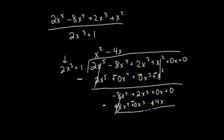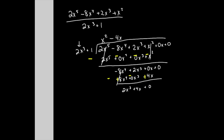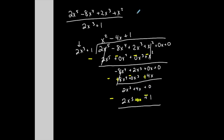2x³ minus 0 is 2x³. 0x plus 4x is positive 4x. Can I keep going? Yes — the degree here is the same as the degree of the divisor. I can multiply 2x³ by positive 1 to get 2x³, so 1 goes on top. 1 times 2x³ is 2x³, and 1 times 1 is positive 1, which goes under the constant column. I subtract — that negative distributes. So 4x plus 0 is 4x, and 0 minus 1 is negative 1.